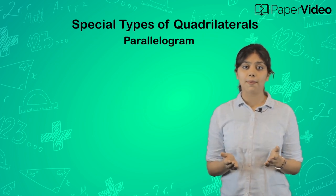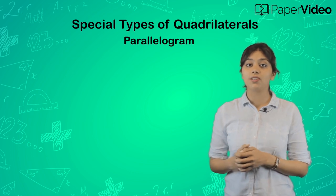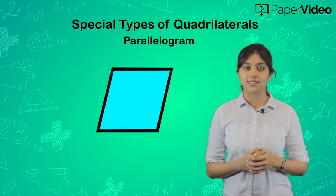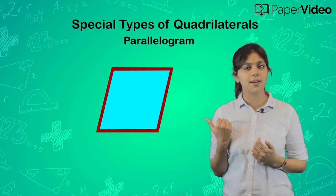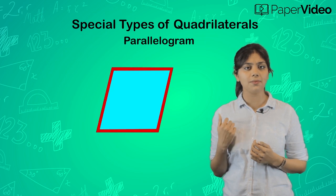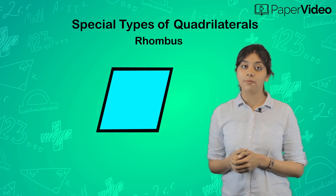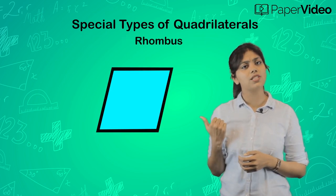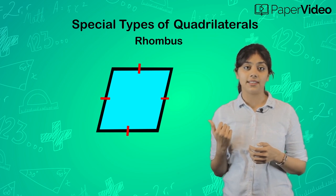Suppose we have a parallelogram such that all four sides are equal in length. Then what do we call such types of parallelograms? They are known as rhombus. In this rhombus, all four sides are equal in length.